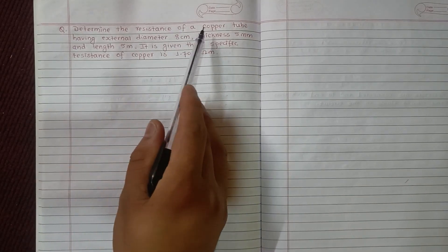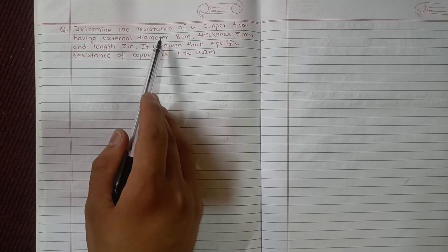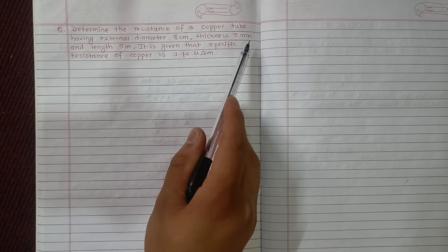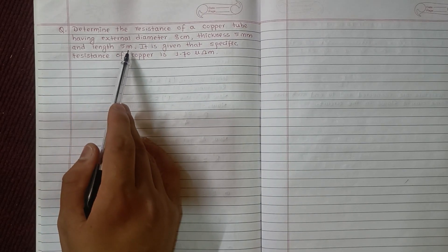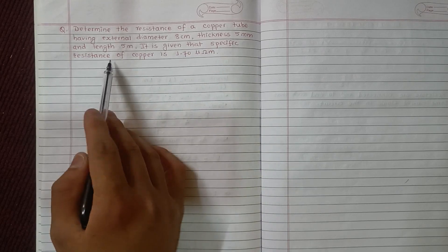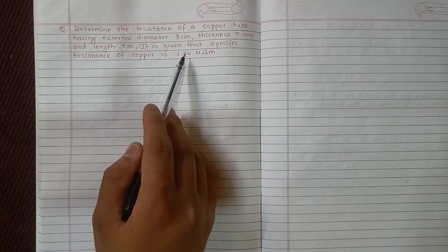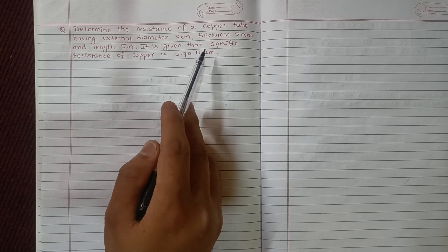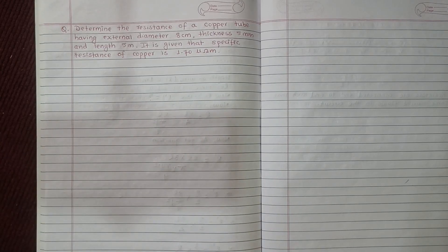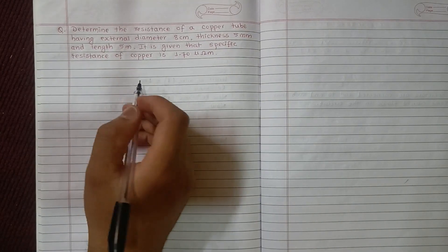Question: Determine the resistance of a copper tube having external diameter 8 centimeter, thickness 5 mm, and length 5 meter. It is given that the specific resistance of copper is 1.70 micro ohm meter.